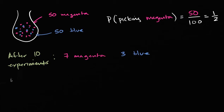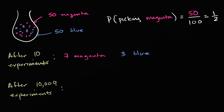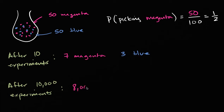But let's say you have a lot of time on your hands. After 10,000 trials — after 10,000 experiments, where you're sticking your hand in the bag without looking, picking out a marble, observing it, and recording what you found — let's say you get 8,000 magenta and 2,000 blue.